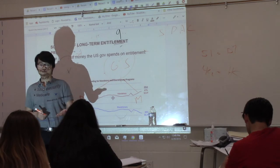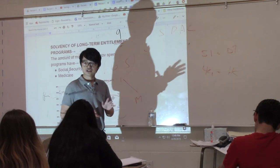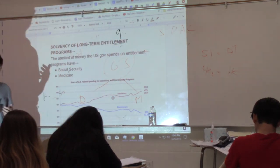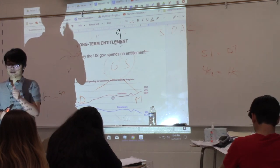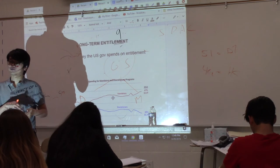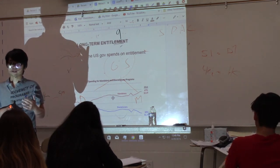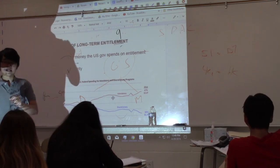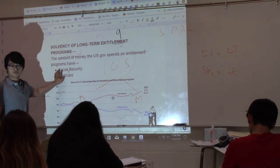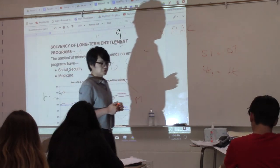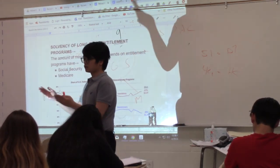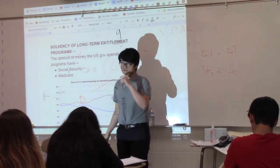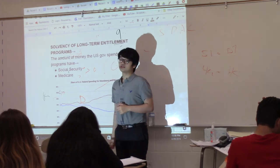Think of it this way: if you're living on your own, discretionary spending is what you spend on clothes — easily changed week to week. Mandatory spending is your bills — rent and electricity — spending you've committed to already. In the United States, most mandatory spending goes to entitlement programs like Social Security and Medicare, which benefit older people. Social Security was founded during FDR's New Deal; Medicare was founded during LBJ's Great Society. We've committed to paying these — your grandparents get a pension and government health care when they retire.